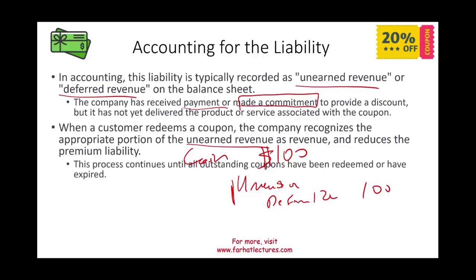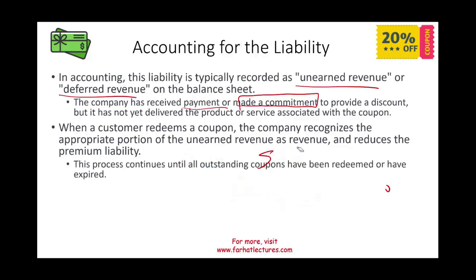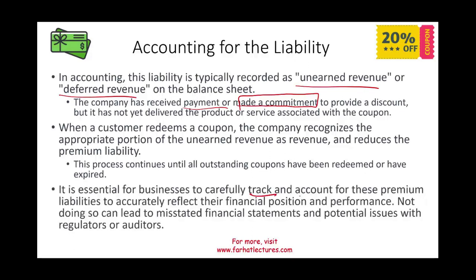This process continues until all outstanding coupons have been redeemed or expired. It is very important for the company to carefully track and account for these premium liabilities and reflect them in the financial statements. If they promise a 20% discount on all future sales, they must show this liability because they will have to deliver goods and services at a discount. Failing to do so would mislead users of the financial statements and could cause issues with regulators or auditors.